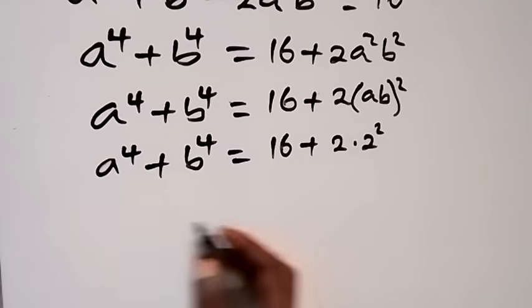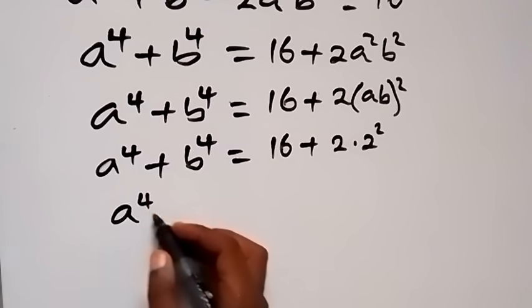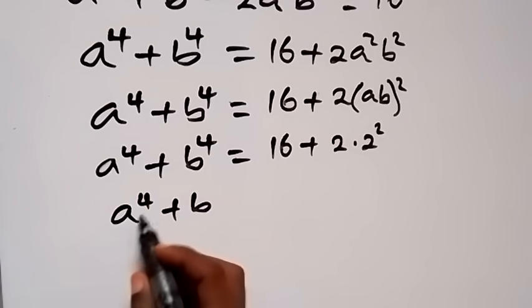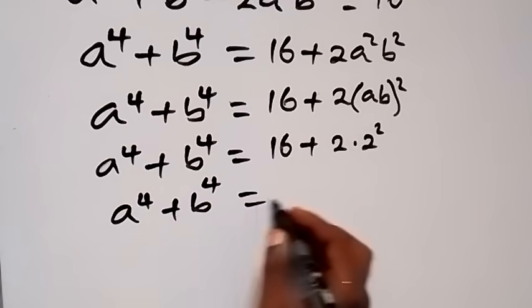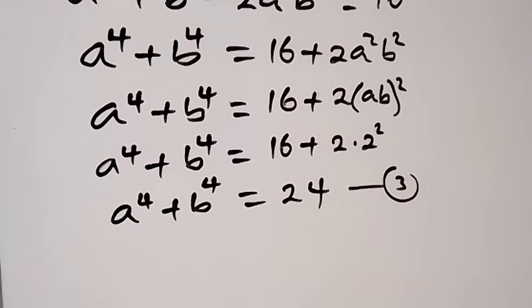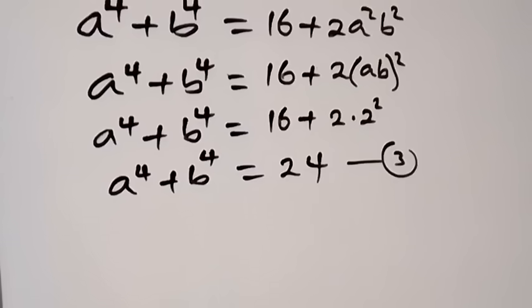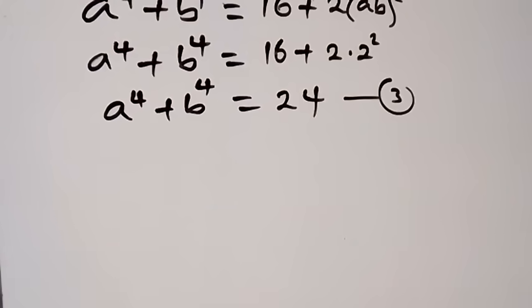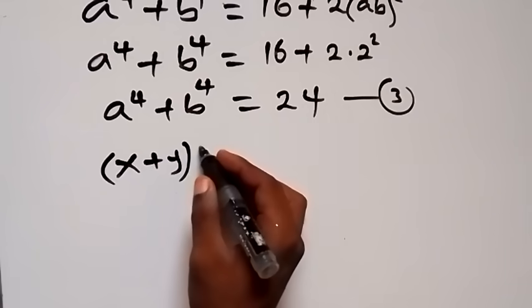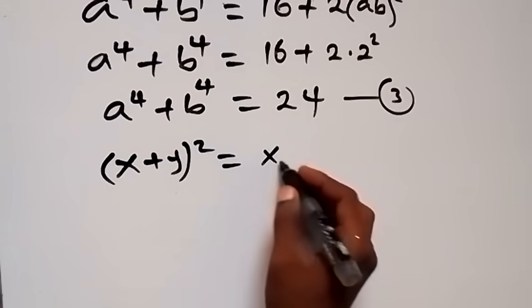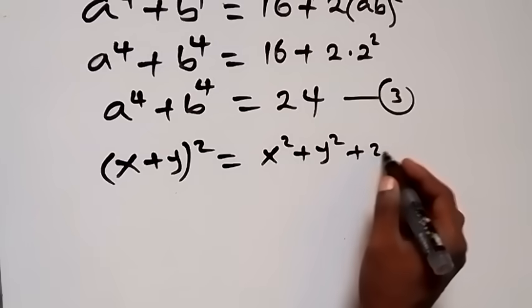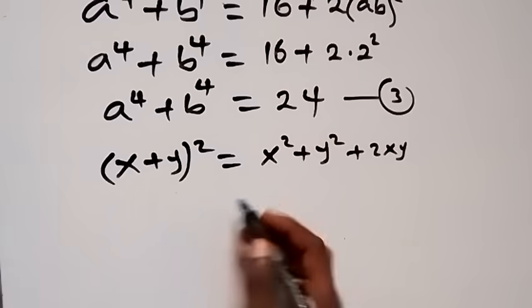So we have a⁴ plus b⁴ equals 24. Let's call this equation 3. Now let's use the identity (x + y)² equals x² plus y² plus 2xy.